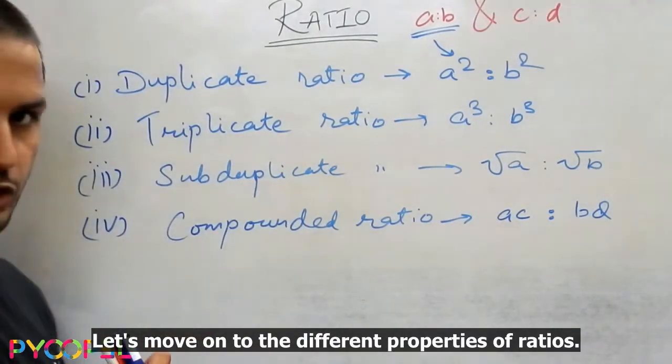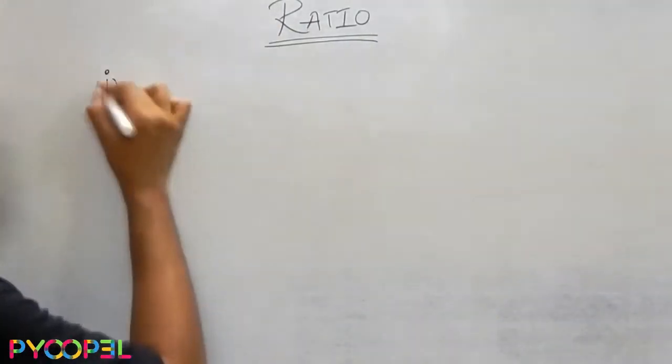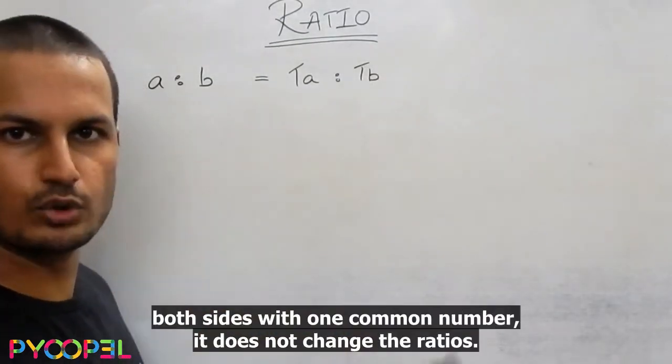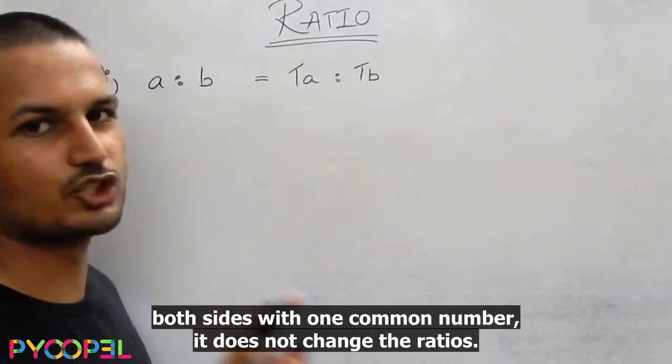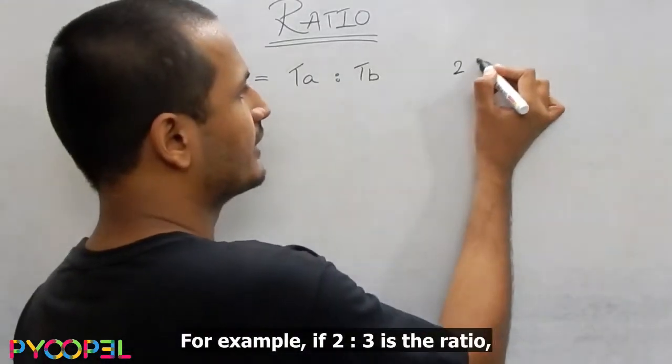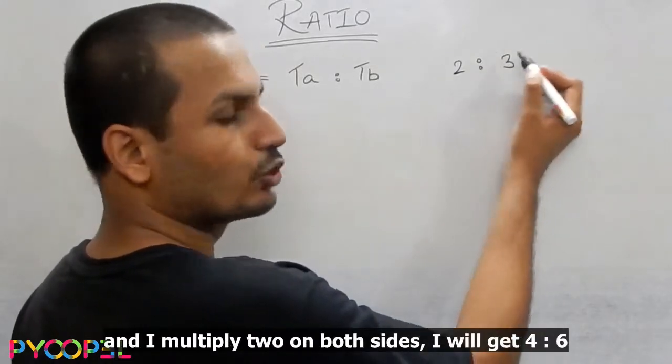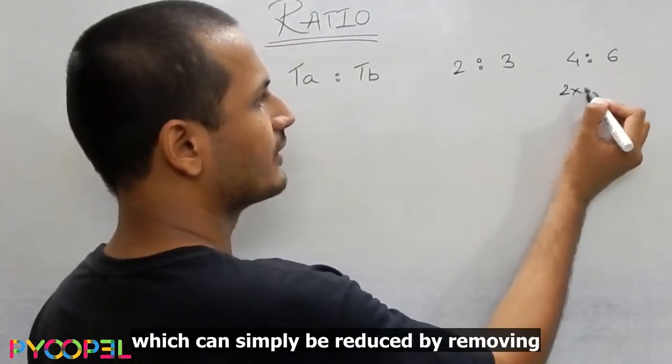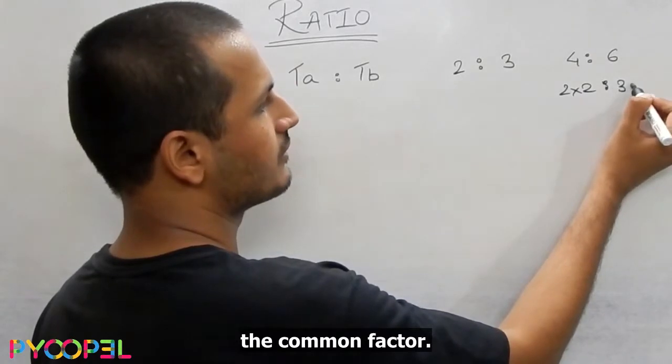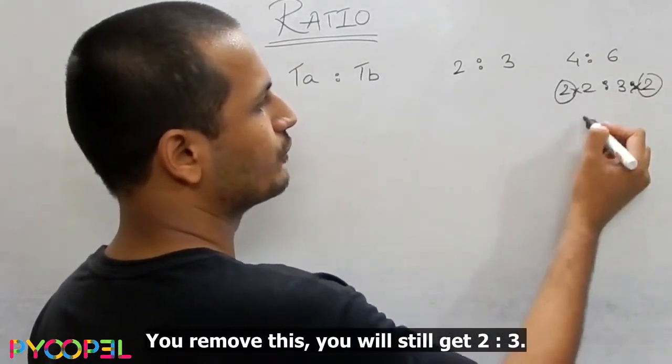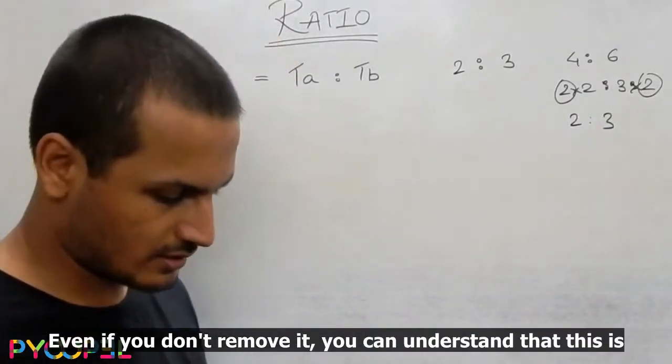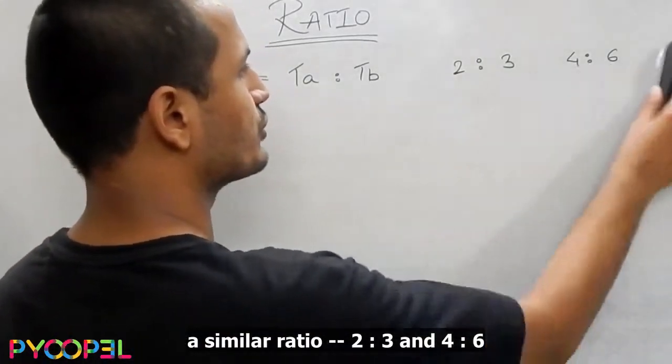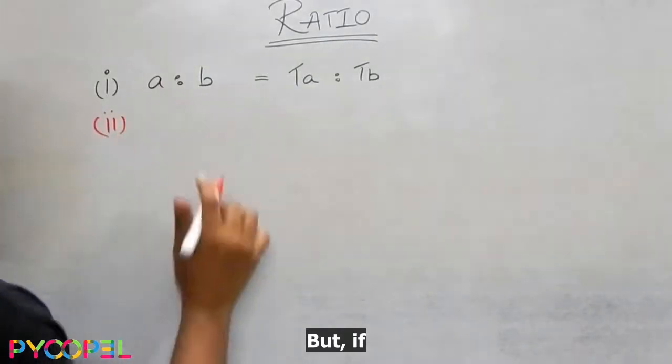Let's move on to the different properties of ratios. This means, if I multiply both sides with one common number, it does not change the ratios. For example, if 2 is to 3 is the ratio and I multiply 2 on both sides, I will get 4 is to 6 which can simply be reduced by removing the common factor. If you remove this, you will get 2 is to 3. You can understand that this is a similar ratio.